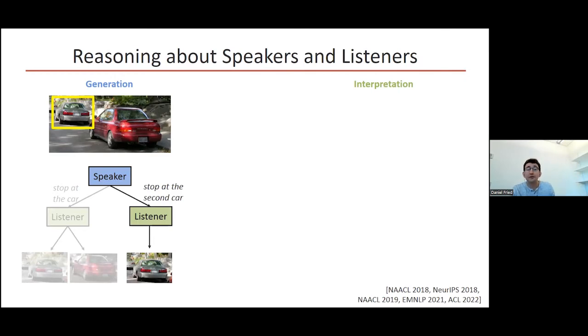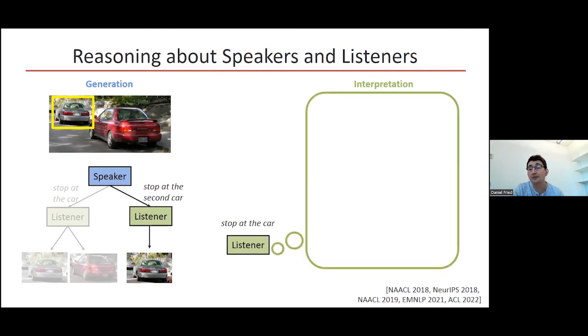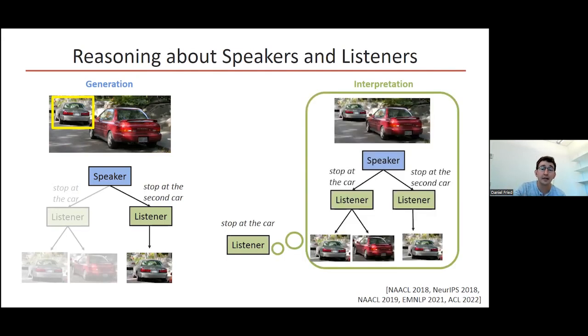You can also use reasoning for the interpretation task. If a listener gets this less clear instruction, like stop at the car, the listener could reason about the speaker reasoning about the listener, and figure the speaker had some goal in mind, and they chose between things they could say to try to get us there. Since they said stop at the car rather than something more specific, they probably meant this car here.